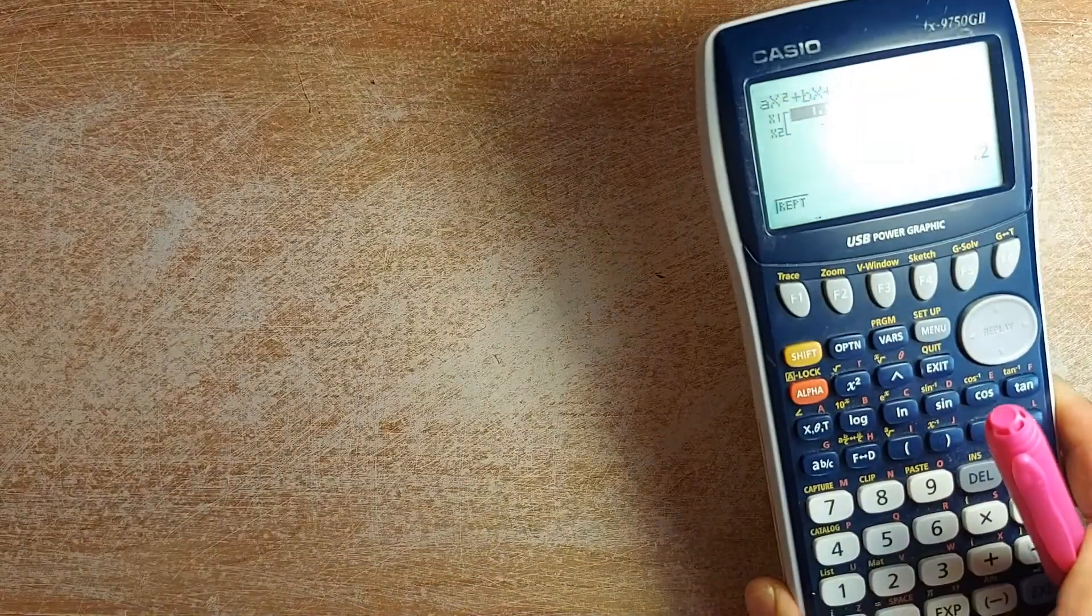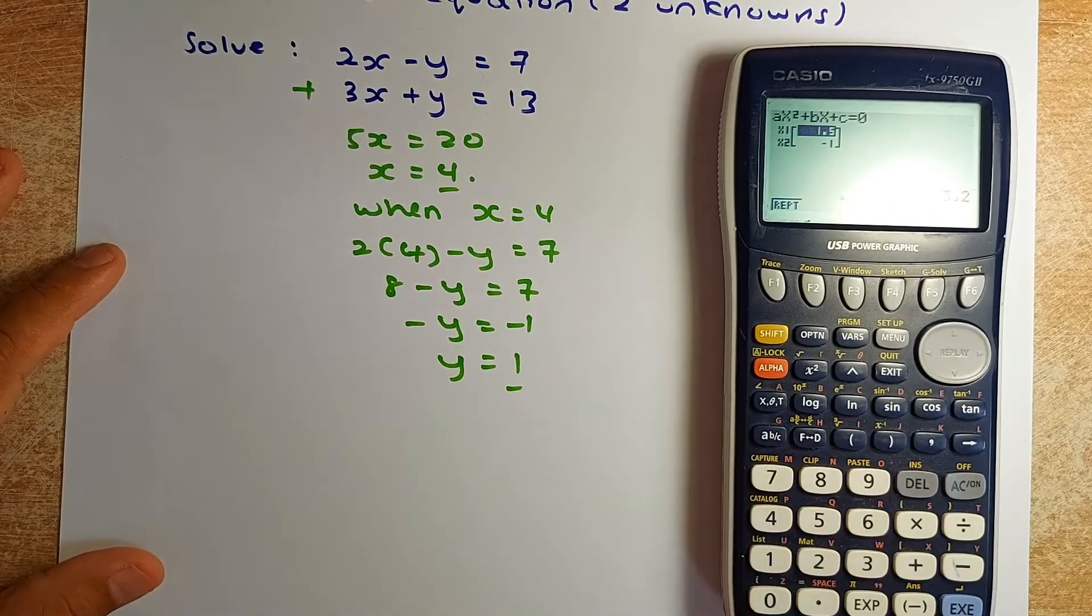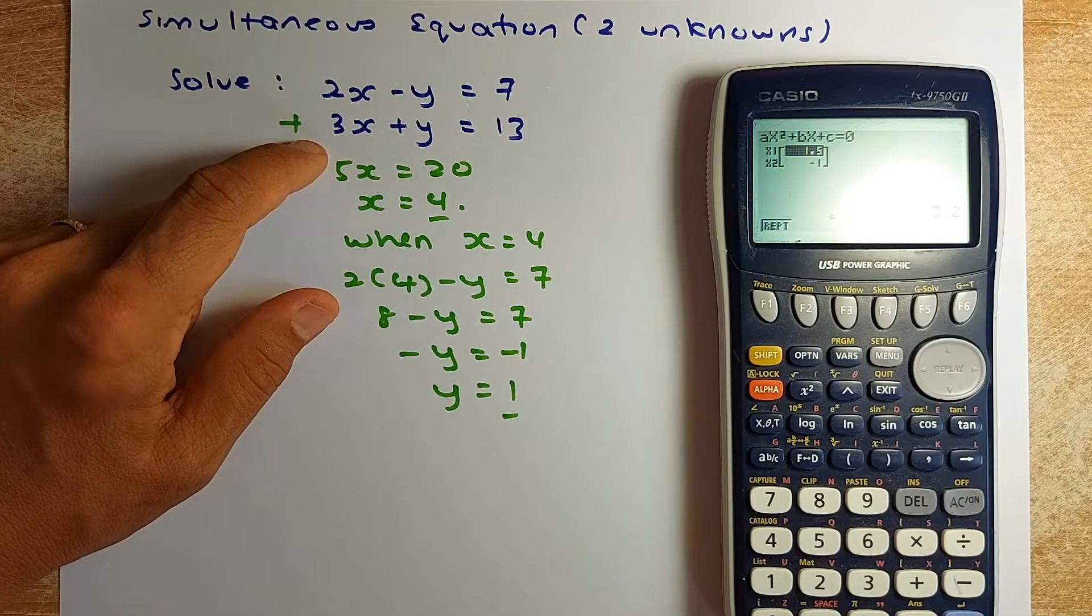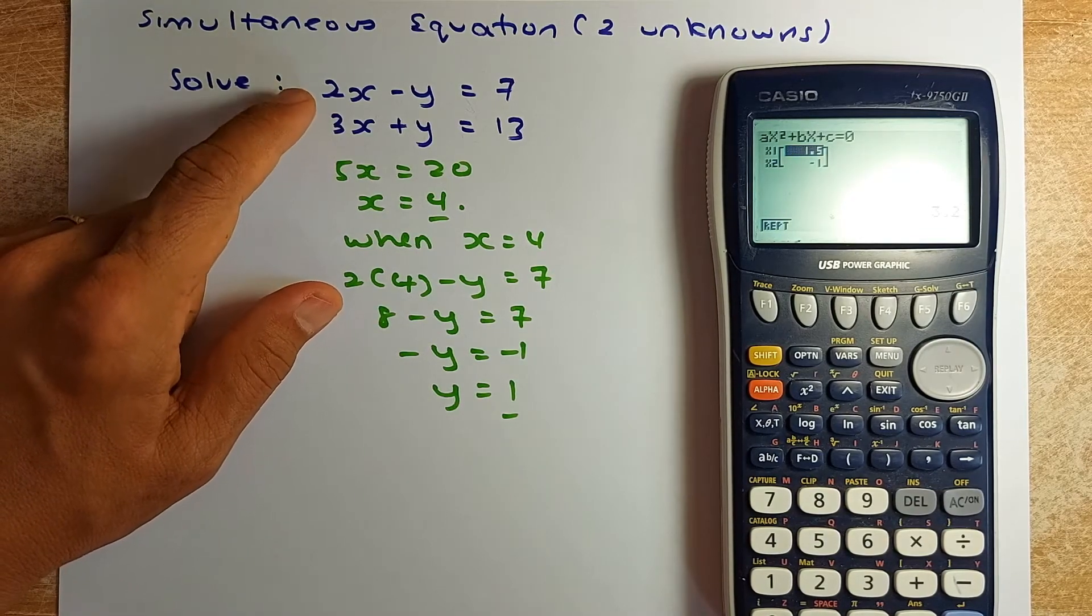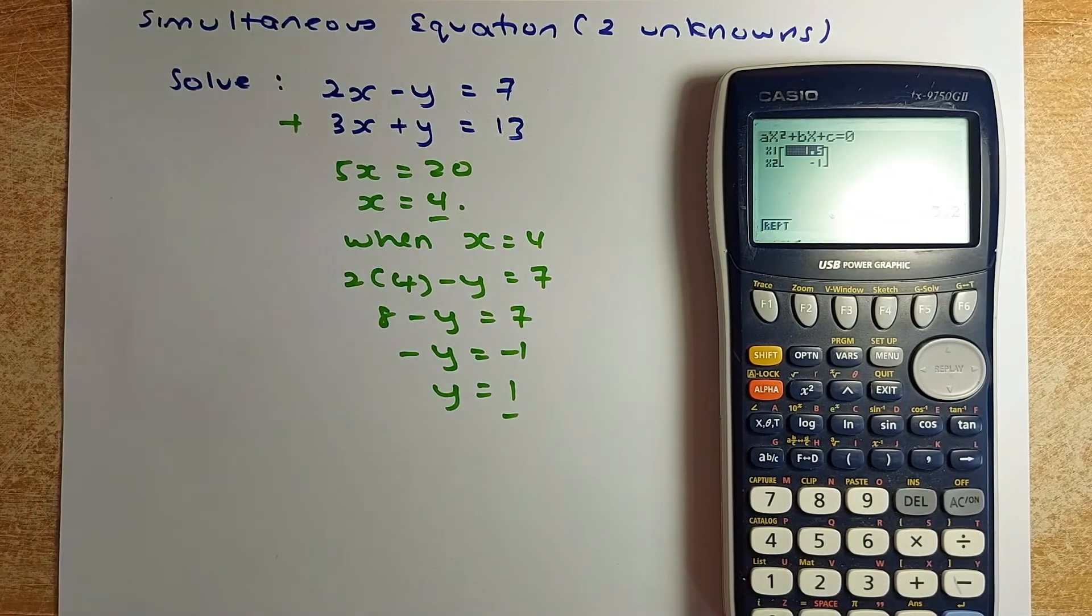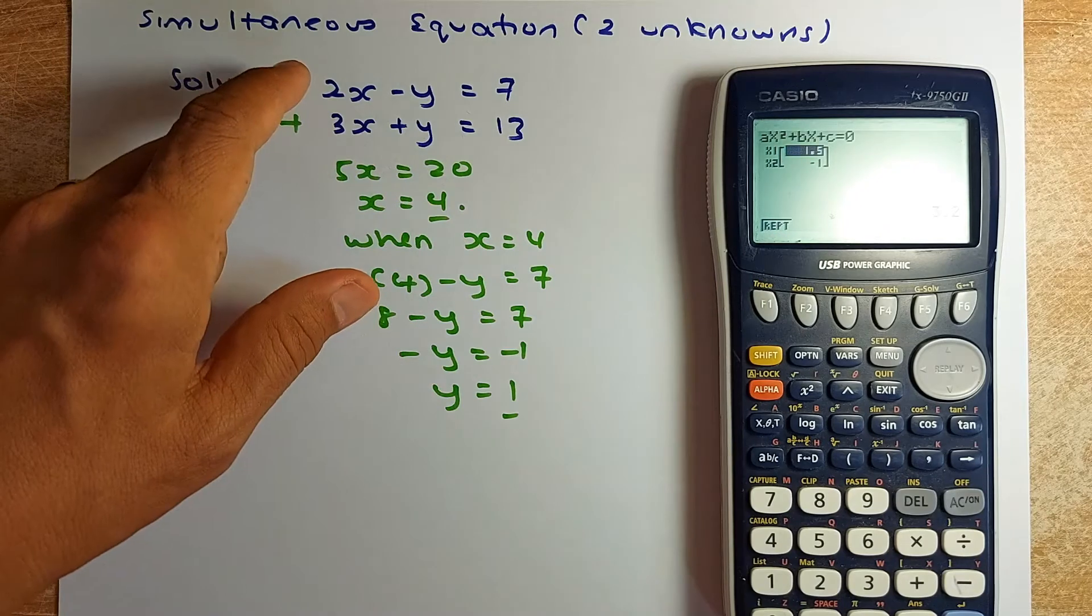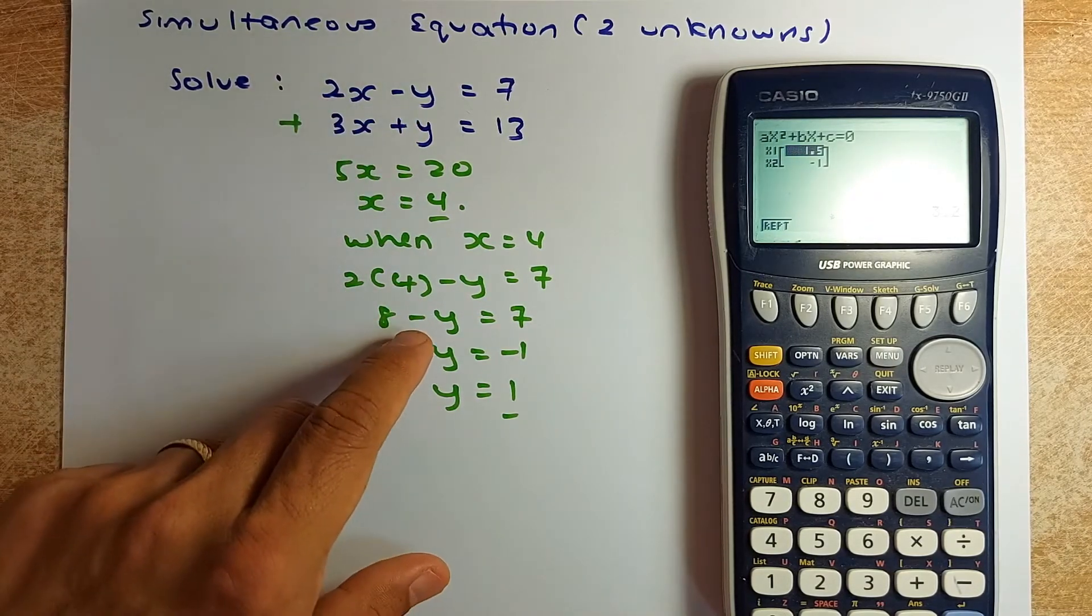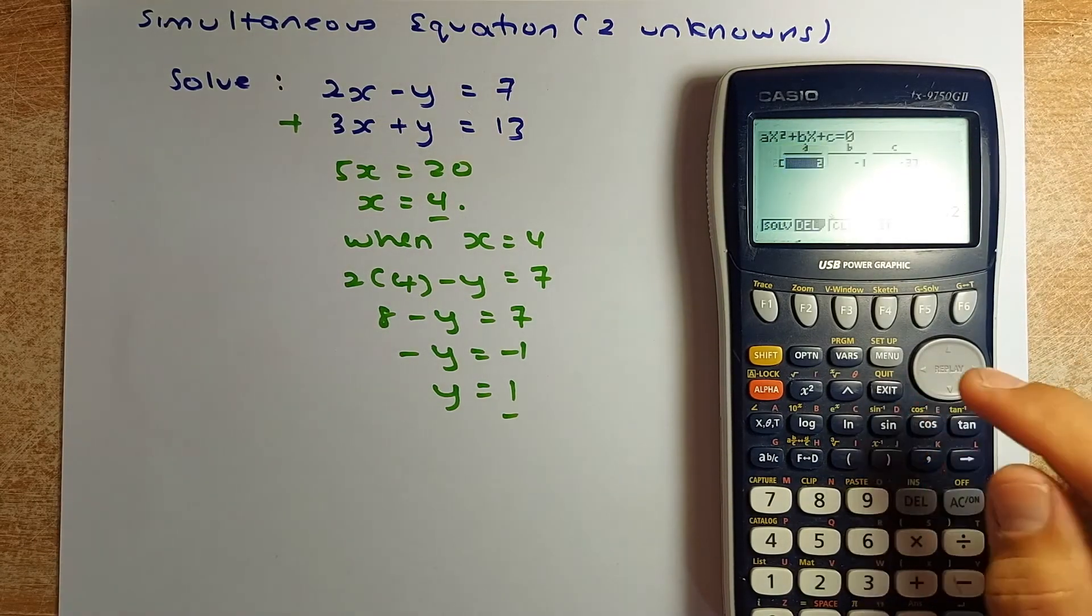Last thing we are going to look at today is called simultaneous. Simultaneous equation means you have 2 unknown. And you have to solve the 2 equations. Simultaneous. So now what we are going to do, we are solving this. 2x minus y equal to 7. 3x plus y equal to 13. There are 2 equations, there are 2 unknown. We need to solve them. To do that manually, we are going to add them up. So 2x plus 3x is going to be 5x. Y minus y plus y is cancelling out. And 7 plus 13 is going to be 20. The next thing you do, 5x equal to 20 divided by 5, x equal to 4. Once you know x equal to 4, substitute 4 into either of the equations. We substitute the first equation. So 2 times 4, x is 4. So 2 times 4 is 8. 8 minus y is going to be 7. And we solve algebraically y equals to 1. So how are we going to put it down in the calculator?